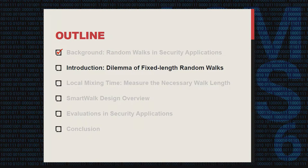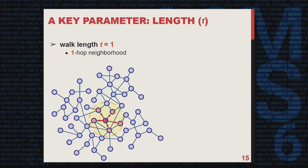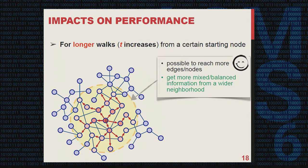I will describe the classic paradigm of random walks and its drawbacks. A very significant parameter is the walk length T. For T equal to one, it limits to a very close neighborhood. If we increase the random walk length, the neighborhood we can reach gets gradually larger. For longer walks, it is beneficial by making it possible to visit and explore more edges and nodes, providing more mixed and balanced information from a wider neighborhood.